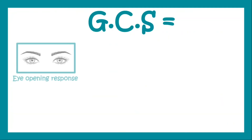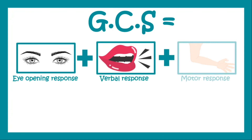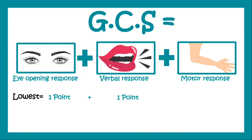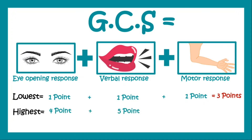GCS is calculated by adding the eye opening response, verbal response, and motor response scores. The lowest possible GCS score is three — one point each for eye opening, verbal, and motor response. The highest is 15 — four for eye opening, five for verbal response, and six for motor response.